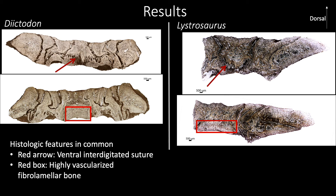The red arrow is showing an interdigitated suture that the preparietal forms with the underlying frontal and parietal bones on the ventral side. The red box is showing an area of highly vascularized fibrolamellar bone on the ventral side of the skull roof. We believe that this may indicate rapid growth in this direction.